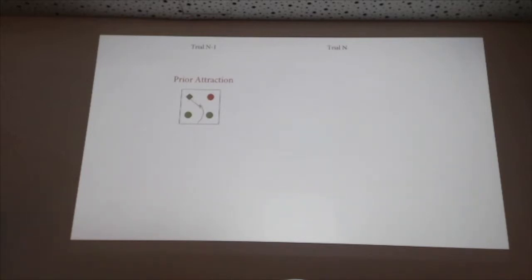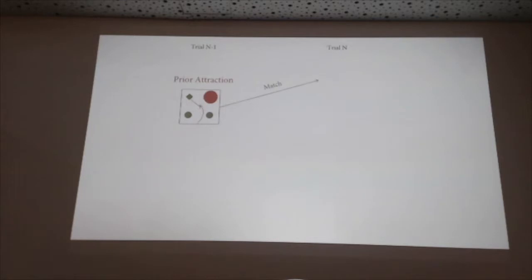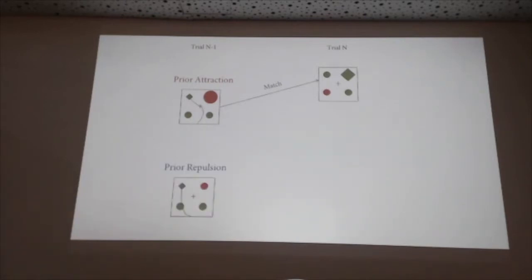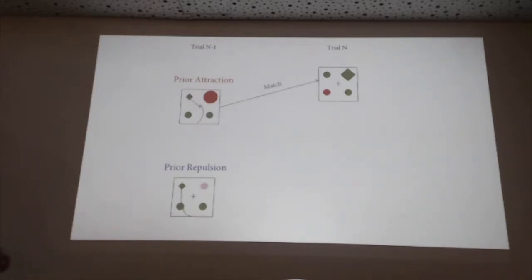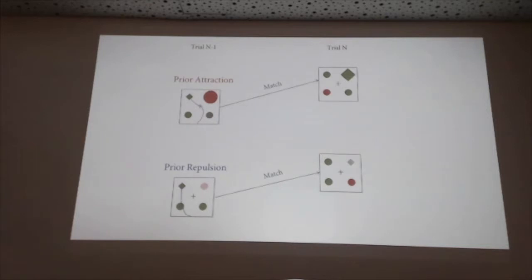The argument is that on a prior attraction trial, you haven't successfully inhibited the distractor — you made a motor movement toward it, so in a sense you prioritized that location. You ultimately disengaged, but there might be lingering prioritization, meaning on trial N you might not be so bad at that location. On prior repulsion trials, you've pretty successfully inhibited that location — you moved away from it — so if you now have to reach to that location, it might be hard, with lingering inhibition making it harder to select something there.